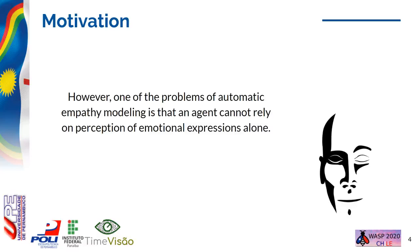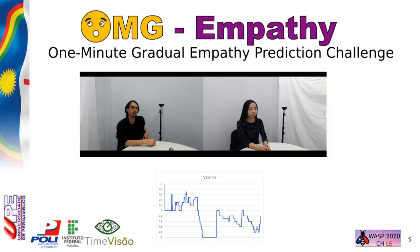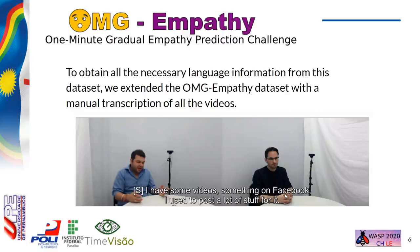For this, we are going to use the OMG Empathy Dataset. The original dataset is composed of 80 videos where an actor tells a story to the subject. Those stories were specifically designed to provoke different affective reactions in the subject, and the subjects provided continuous self-assessment annotation on how they felt using a scale from 1 to minus 1. To obtain all the necessary language information from this dataset, we extended the OMG Empathy Dataset with a manual transcript of all videos.